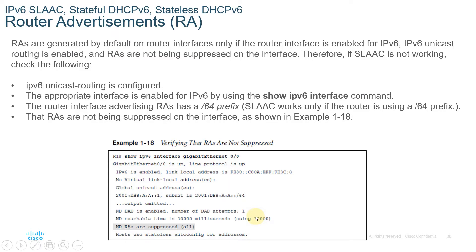Router Advertisements are generated by default on the router only if the router interface is enabled for IPv6, IPv6 unicast routing is enabled, and RAs are not being suppressed. If SLAAC is not working, check: IPv6 unicast routing is configured, the appropriate interface is enabled for IPv6 using show ipv6 interface, the router interface advertising RAs has a /64 prefix — SLAAC works only with /64 — and that RAs are not being suppressed on the interface. To verify an IPv6 address generated by SLAAC, use show ipv6 interface G0/0.